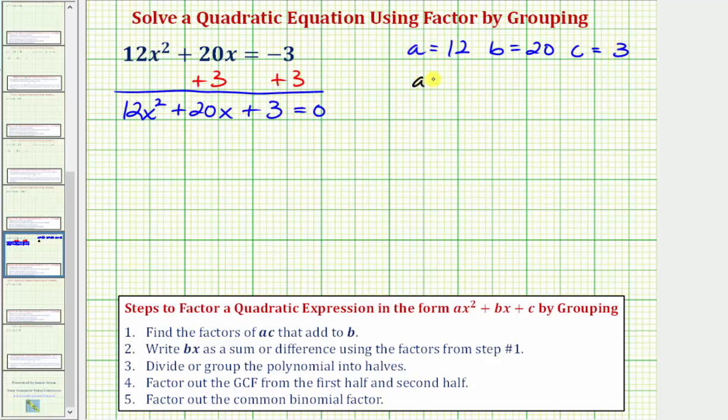Now we want to find ac, which means a times c, which would be 12 times three, which equals positive 36. So we want to find the factors of positive 36 that add to b, which equals 20. So we're looking for two numbers that when we multiply them we get positive 36, but when we add them we get positive 20. If you can't just think of the two factors that we need, I would recommend listing all the factors of 36.